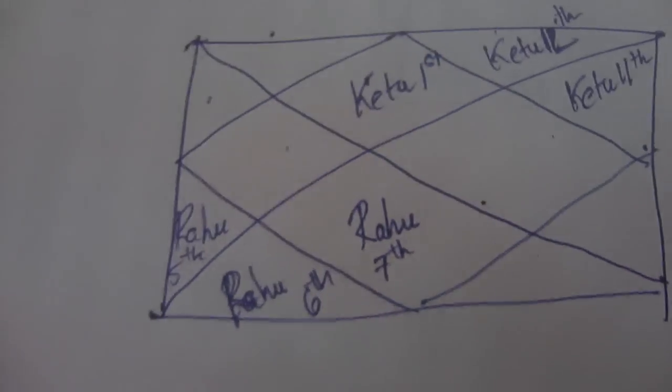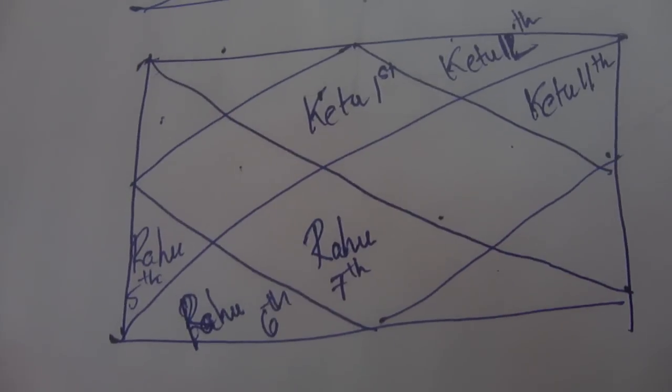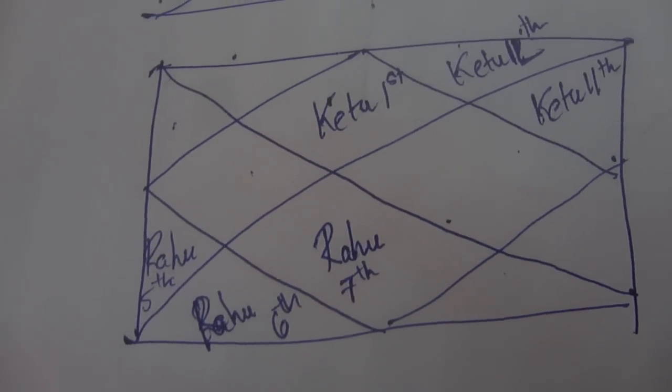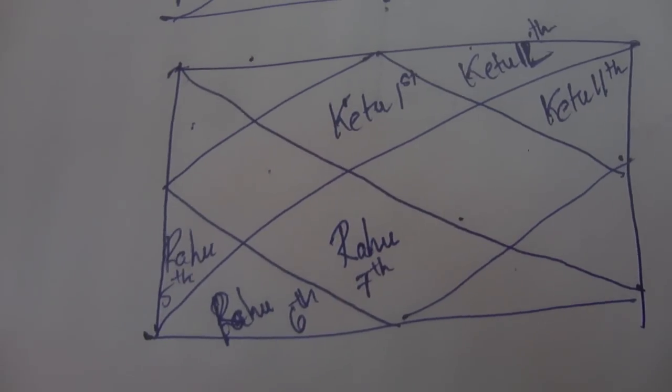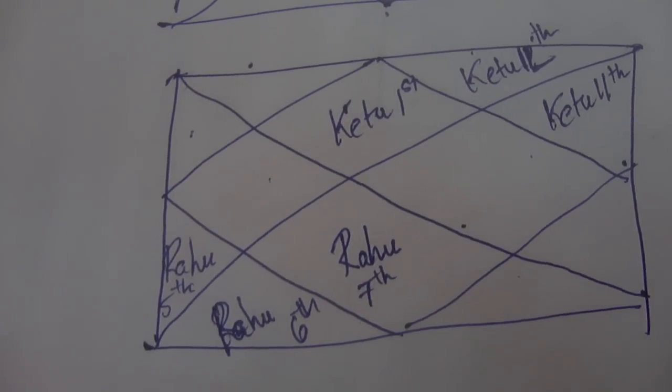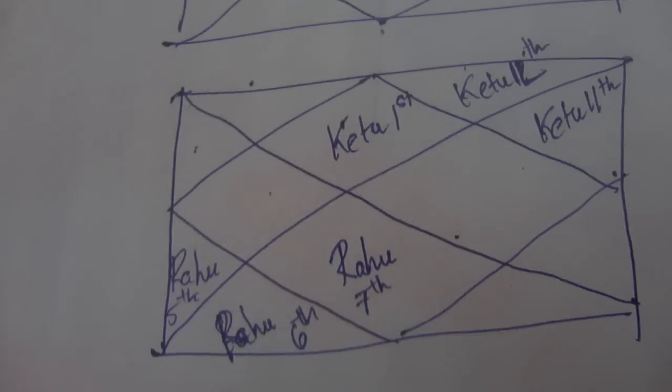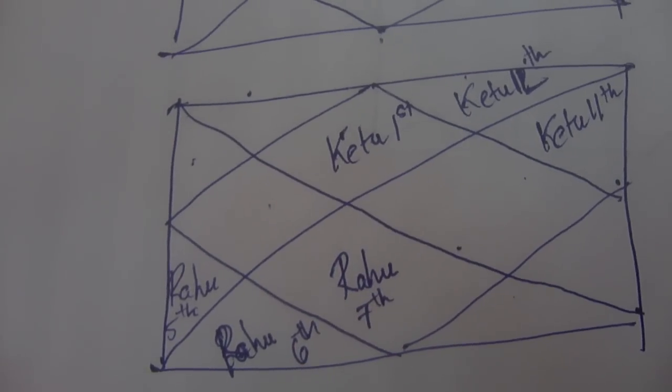Good morning everyone, this is another session on Vedic Astrology and we will be doing the placements of Rahu in the 7th house and Ketu in the 1st house and we will try to learn about what this placement could mean.